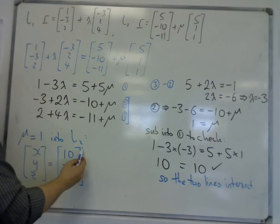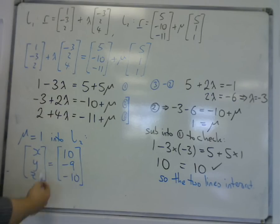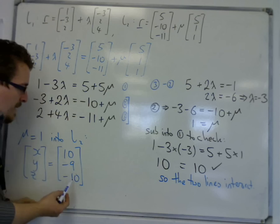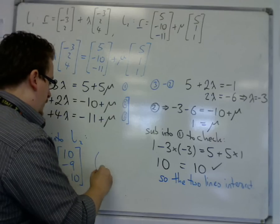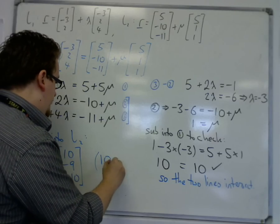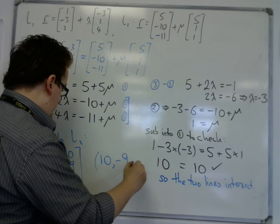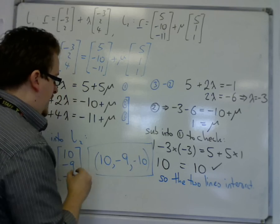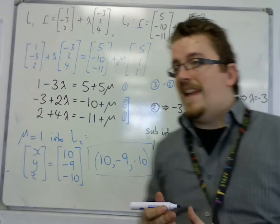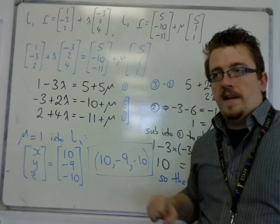So this is the vector that will get me from the origin to the point of intersection. So the coordinates of the point of intersection is 10 minus 9 minus 10. So that is where the two lines intersect in the 3D space.